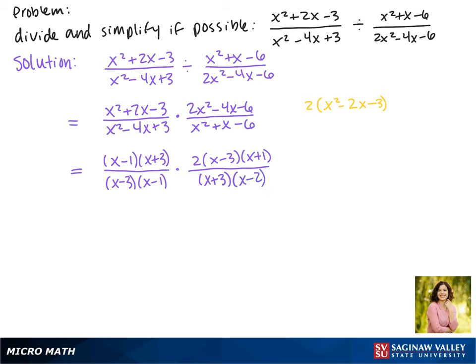So now that everything is factored we can start canceling common factors. We have an x plus 3 in the top and the bottom, an x minus 3, and an x minus 1.